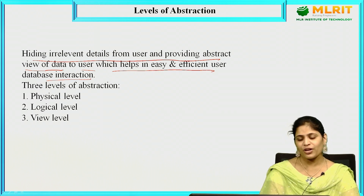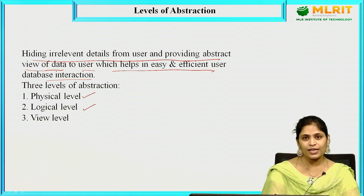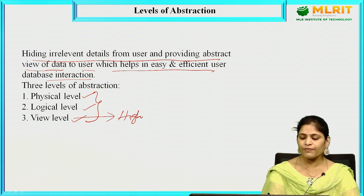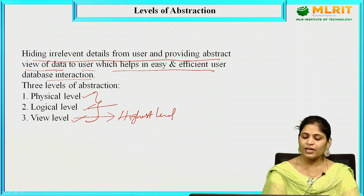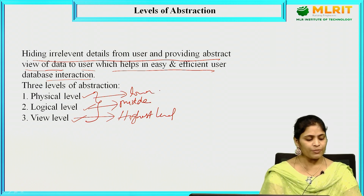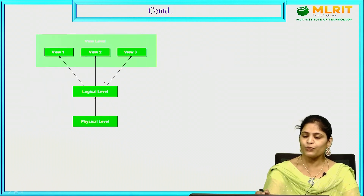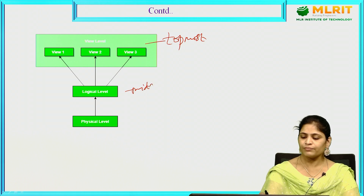Here we have three levels of abstraction: physical level abstraction, logical level abstraction, and view level abstraction. View level is the topmost level — the highest level. Logical level is the middle level and physical level is the lower level. This is represented in a diagrammatic representation: physical level at the bottom, logical level in the middle, and view level at the top.